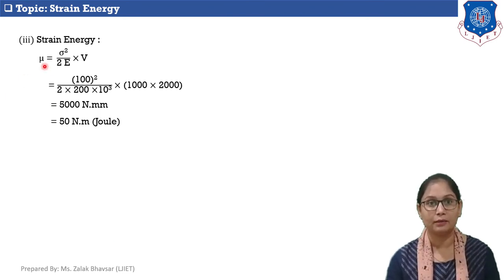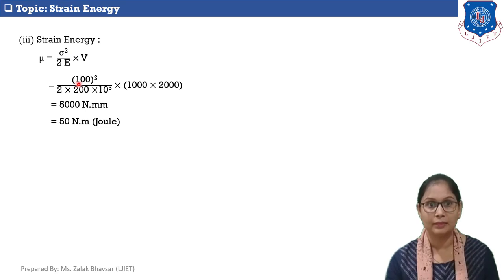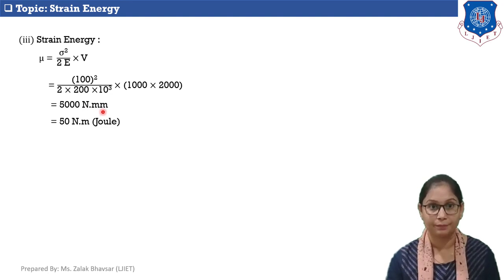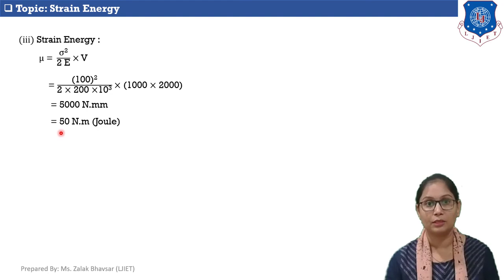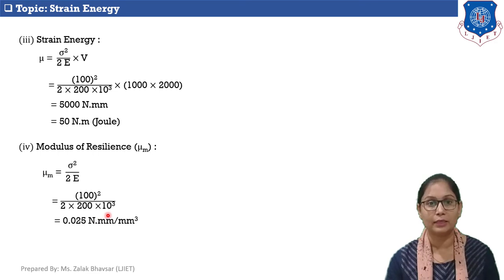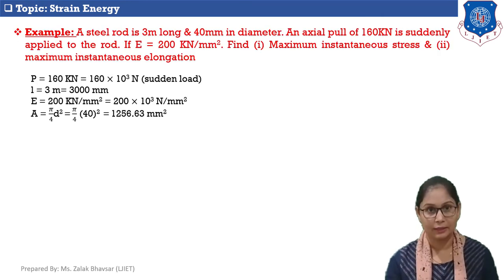Now let's calculate strain energy. mu = sigma² / (2E) × V. Sigma = 100, so 100² / (2 × 200×10³) × (1000 × 2000) = 5000 N·mm = 50 N·m. Now modulus of resilience: mu_m = sigma² / (2E) = 100² / (2 × 200×10³) = 0.025 N·mm per mm³.